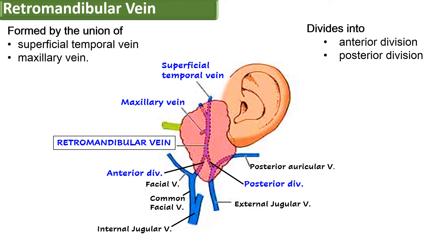The transverse facial vein is actually a tributary of the superficial temporal vein. The retromandibular vein is formed within the substance of the parotid gland by the joining of the superficial temporal vein and the maxillary vein. It courses through the parotid gland and just above the apex divides into an anterior division and a posterior division.